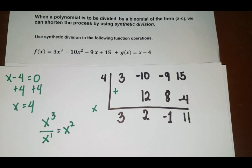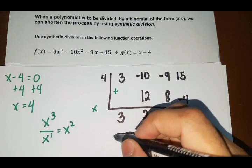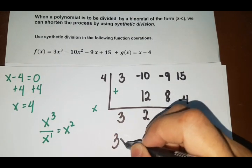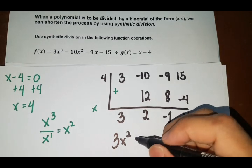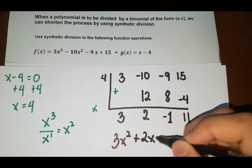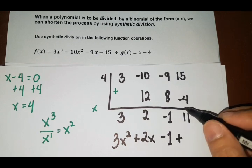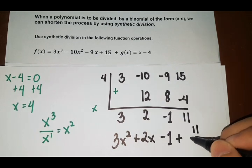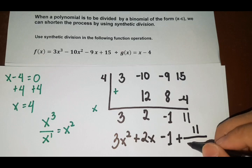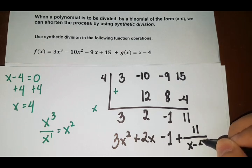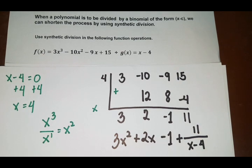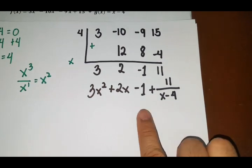So our answer will be 3x squared plus 2x minus 1 plus 11. Since this is remainder, so we have to get the divisor as the denominator. So 11, x minus 4. Okay, so this is your answer.